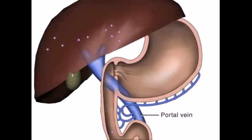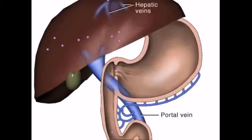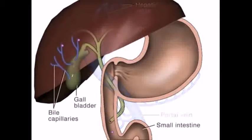Once absorbed into the blood, the drug molecules travel through the liver via the portal system. Some drugs are immediately metabolized in the liver — this is called first-pass metabolism. Others may be secreted back into the small intestine in the bile, in what is known as enterohepatic cycling.